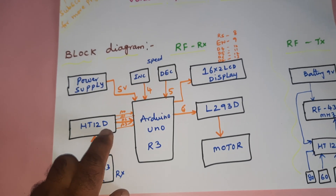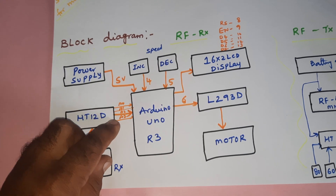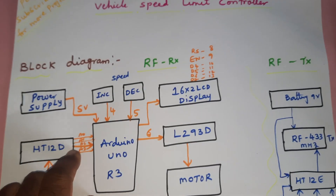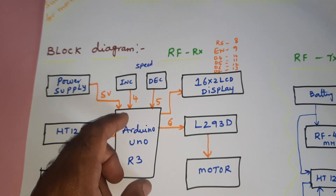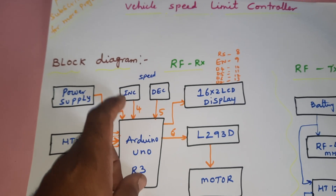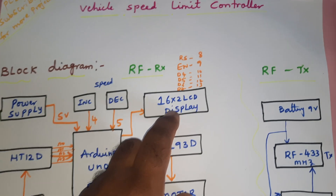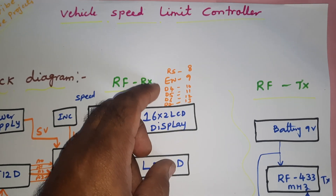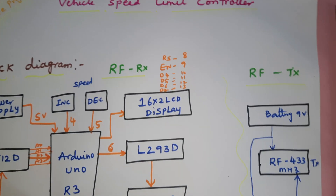The HT12D decoder IC is connected with A0, A1, A2, A3 GPIO pin numbers. Speed increase and decrease buttons are connected to GPIO pins 4 and 5. A 16x2 LCD display is connected with RS, Enable, D4, D5, D6, D7 at pins 8, 9, 10, 11, 12.